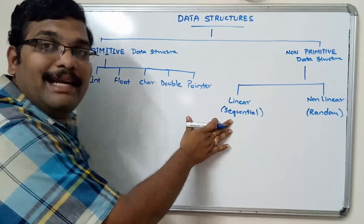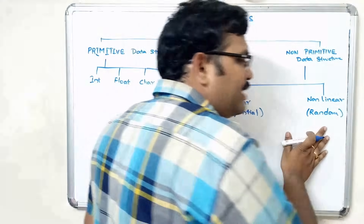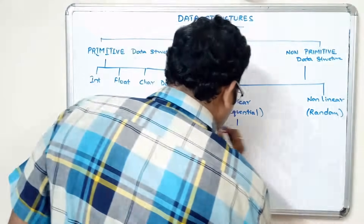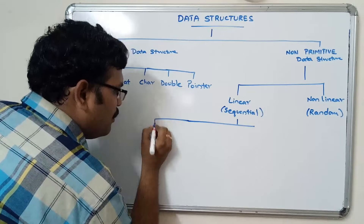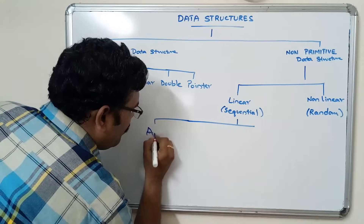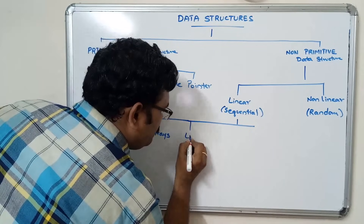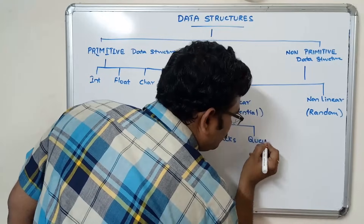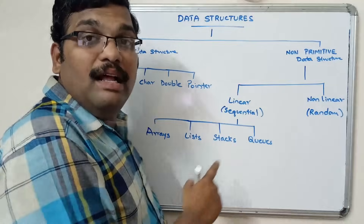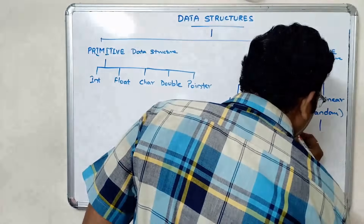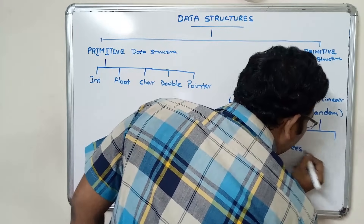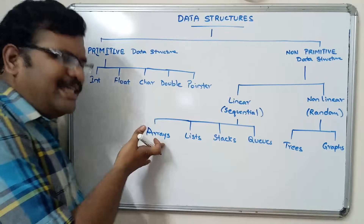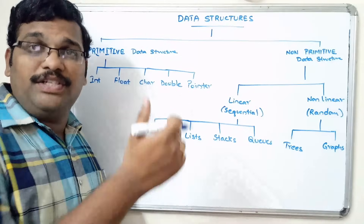Now, what are the types of linear data structures? The first one is lists, then stacks, and queues. These come under linear data structures. Nonlinear data structures have only two categories: trees and graphs. Arrays, which we have seen in C language, also store sequential elements.